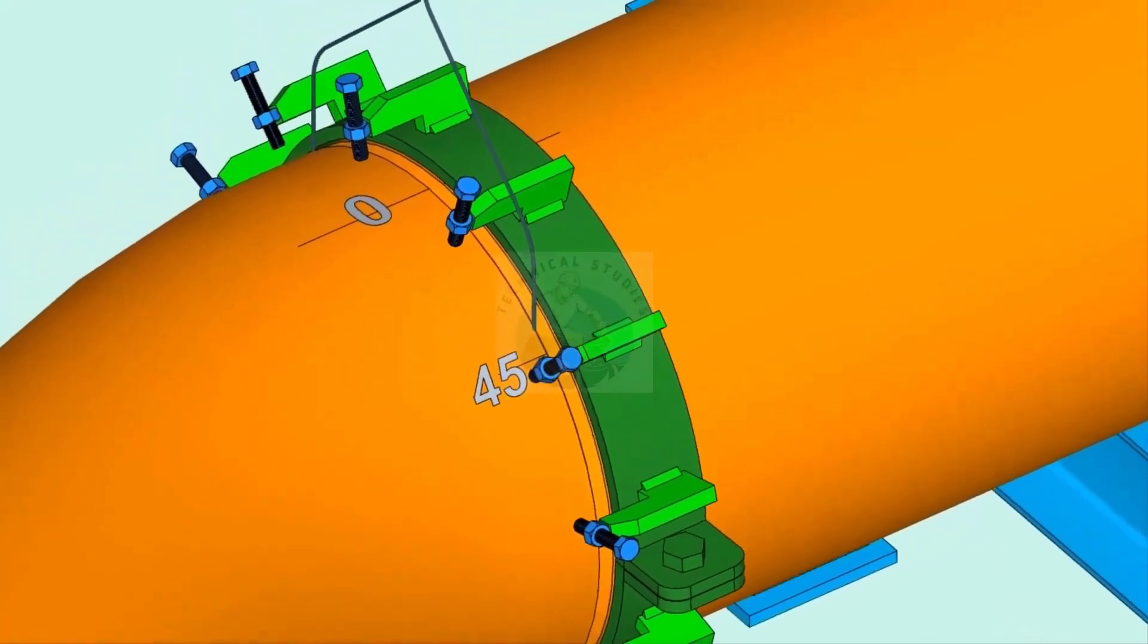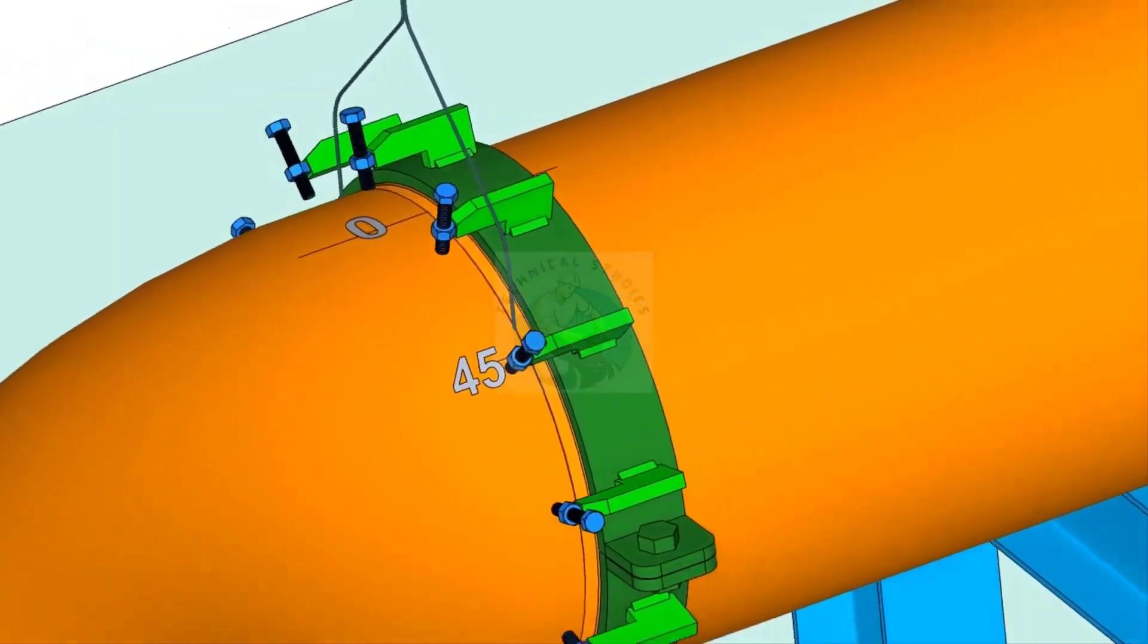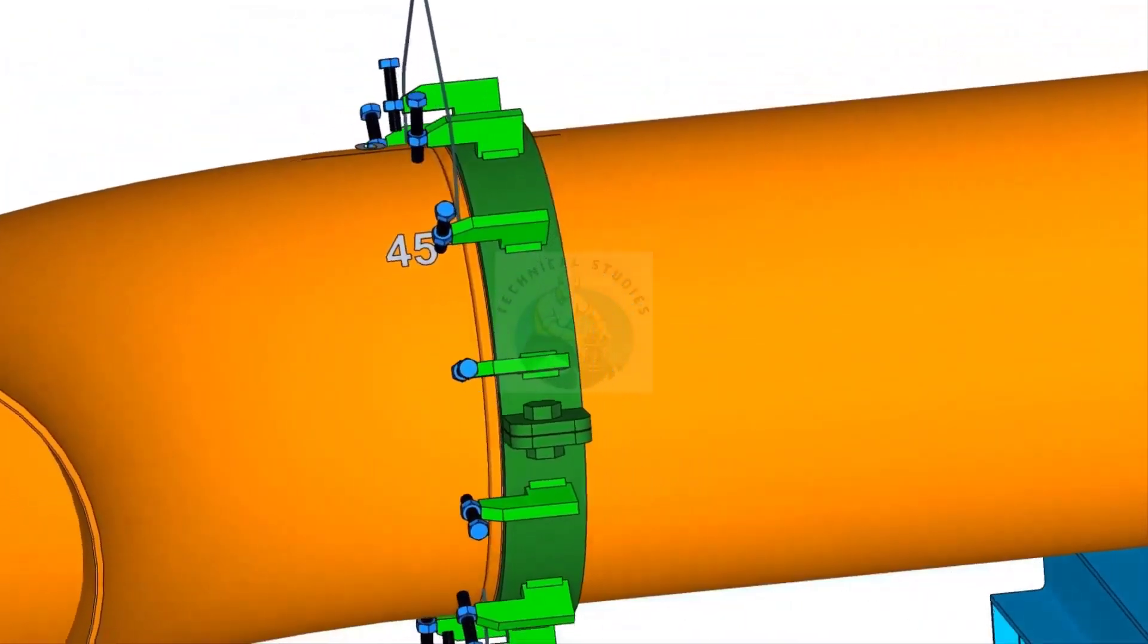Put the gap rod in the joint. Now slowly rotate the elbow until the 45-degree mark comes opposite to the 0 mark on the pipe.